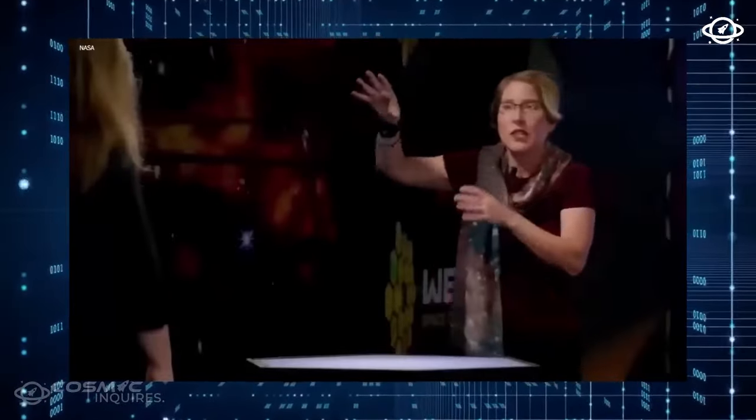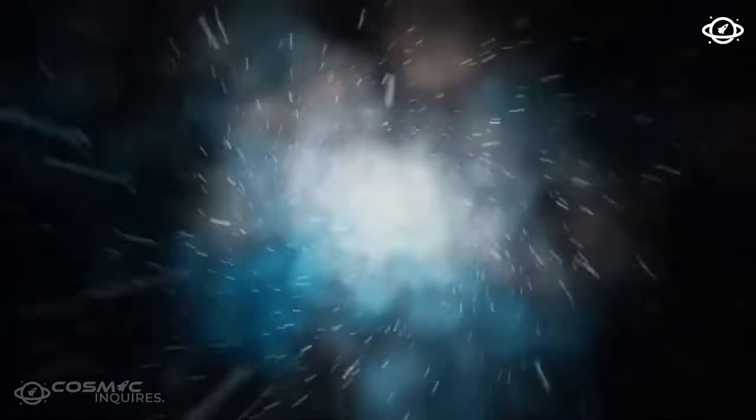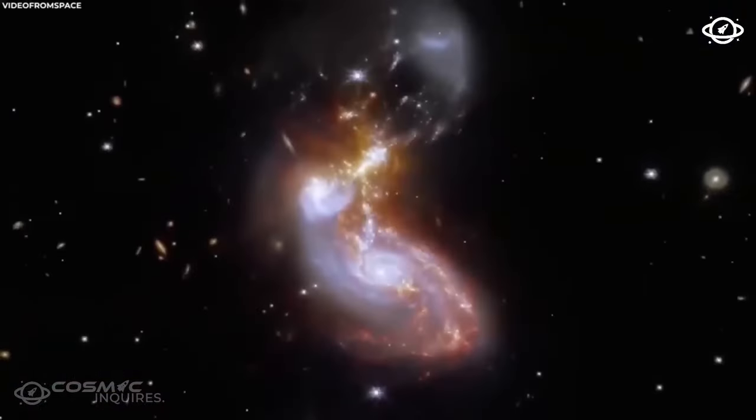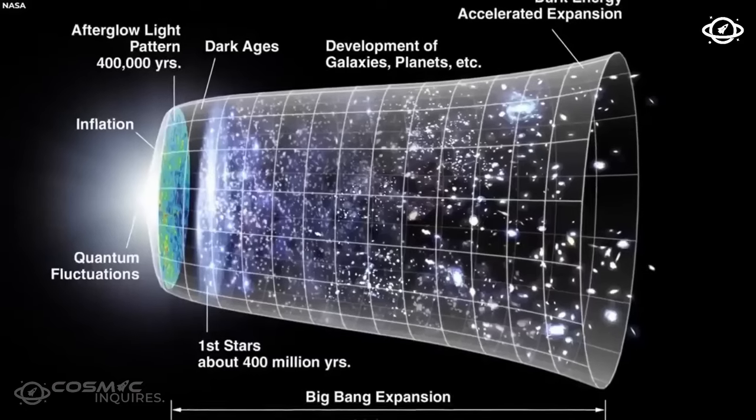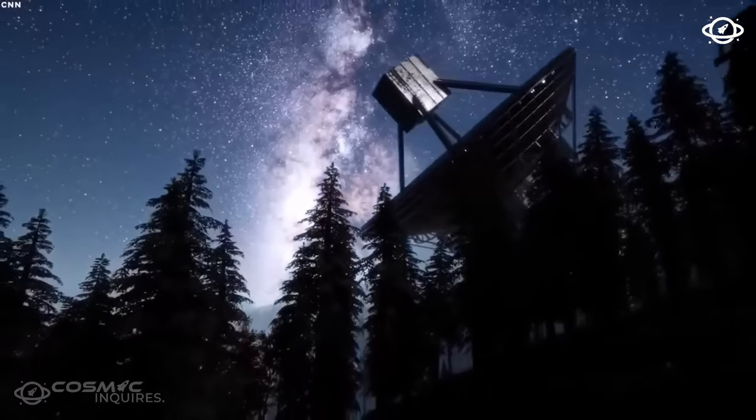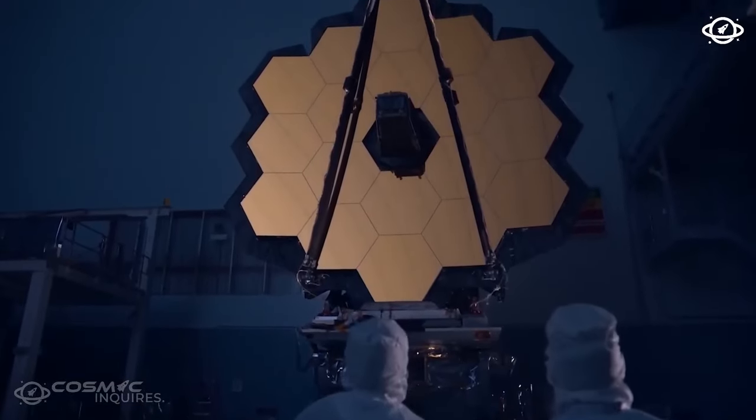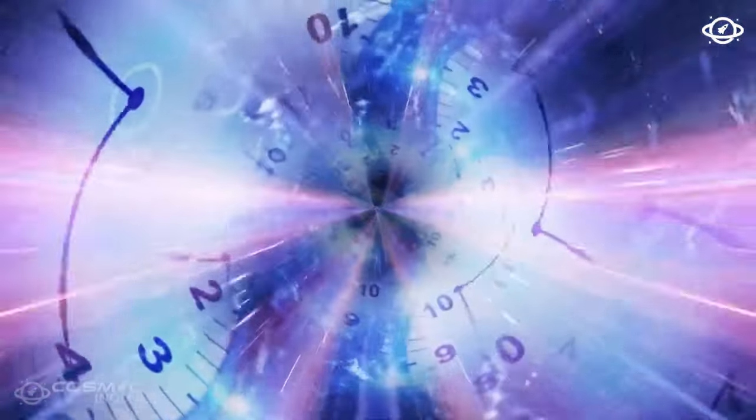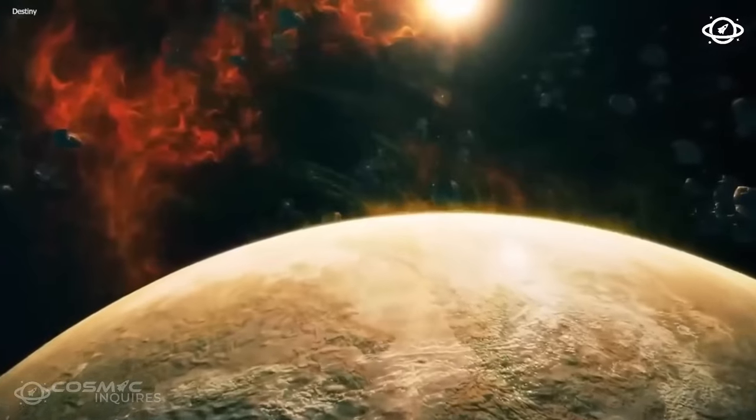The James Webb Space Telescope's revelations about time have also ignited discussions within the field of astrophysical and cosmological simulations. Scientists use computer simulations to model the behavior of celestial objects, galaxies, and even the entire universe over vast time scales. These simulations rely heavily on our current understanding of time and space. The anomalies observed by the JWST raise questions about whether existing simulation models accurately represent the complexity of the cosmos. Astrophysical simulations are integral to our ability to comprehend cosmic phenomena, such as the formation of galaxies, the evolution of stars, and the dynamics of black holes. The anomalies in time, as detected by the JWST, challenge researchers to refine their simulation models to account for potential variations over time under specific conditions. This, in turn, may lead to more accurate predictions and insights into the behavior of the universe.